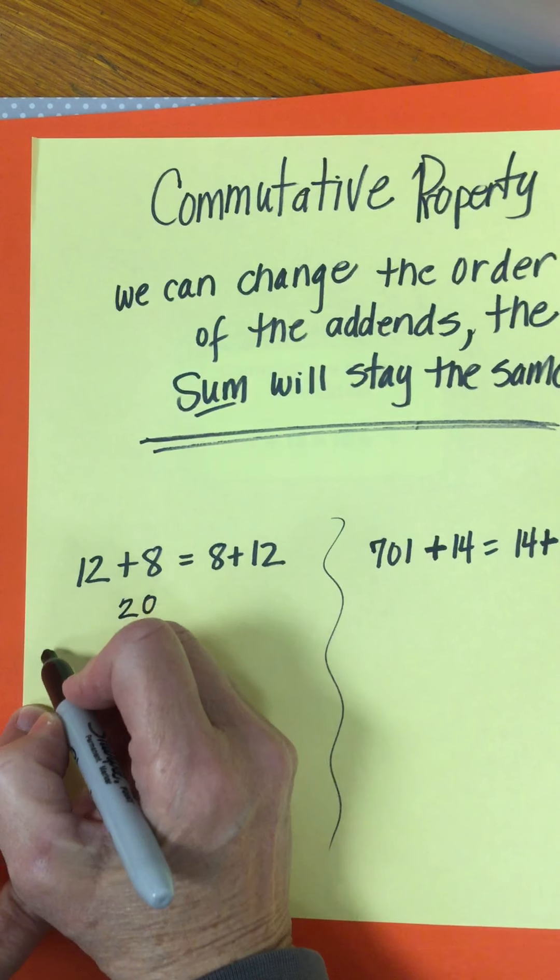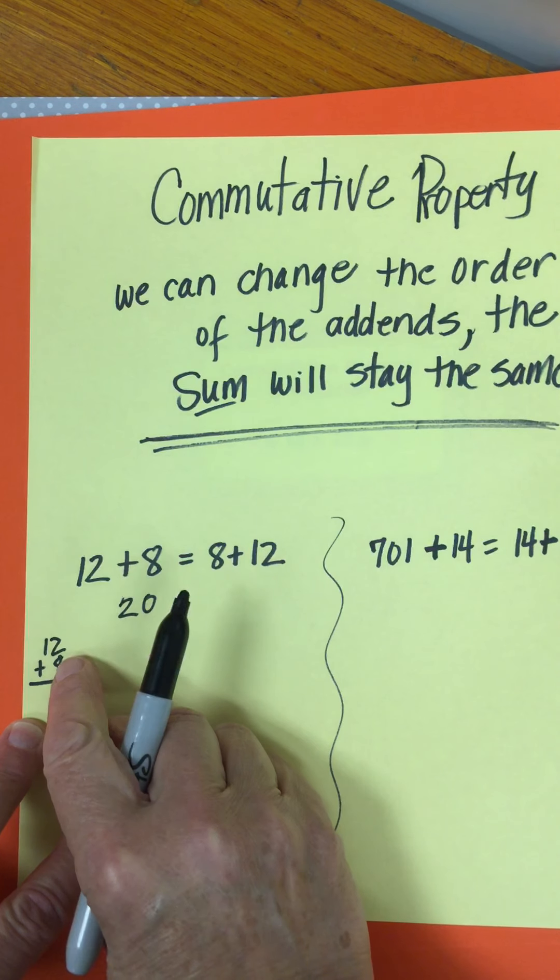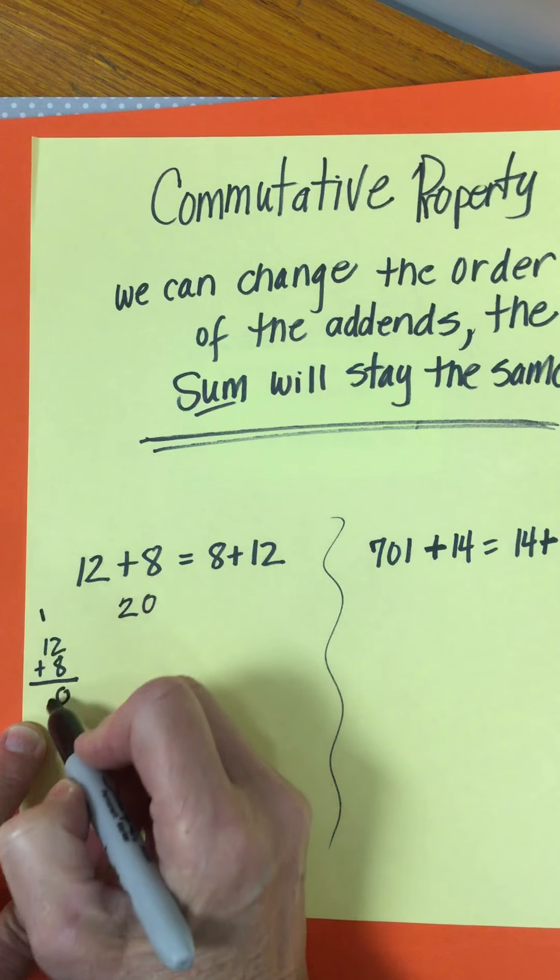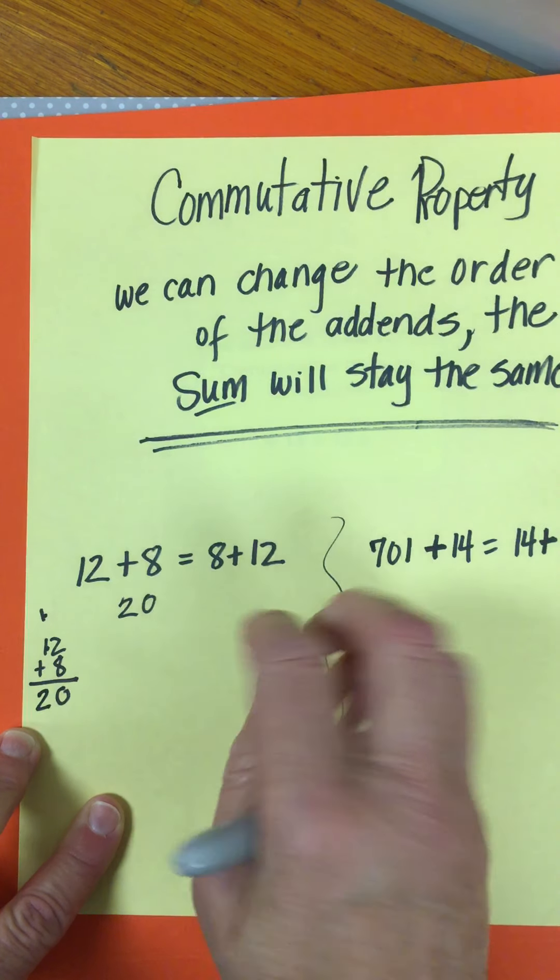And boys and girls, it's okay right now at this point of the year if you can't see that and you need to add them up vertically. 8 plus 2 is 10 so I put my 0 down, carry my 1 and so that 1 plus the 1 I carry gives me 20. Okay, so that side is 20.